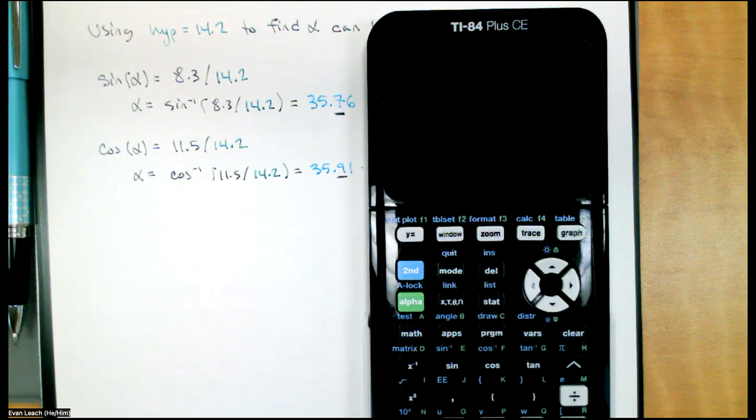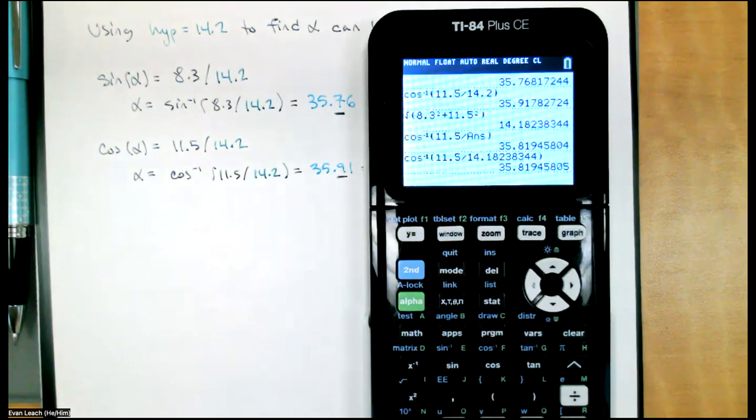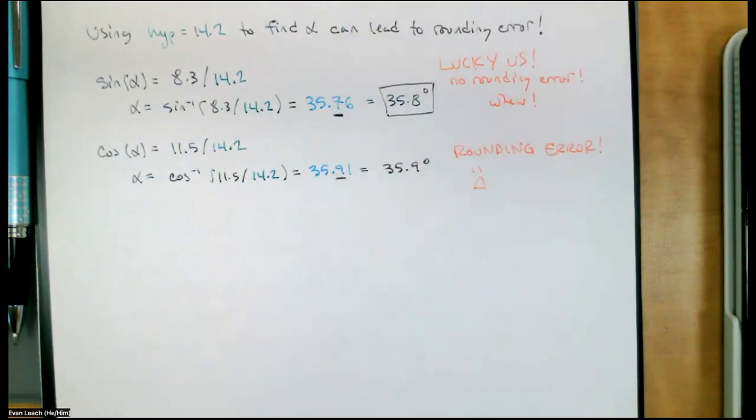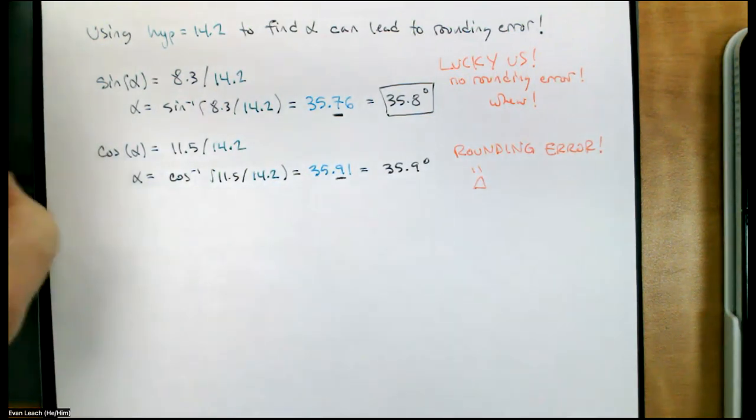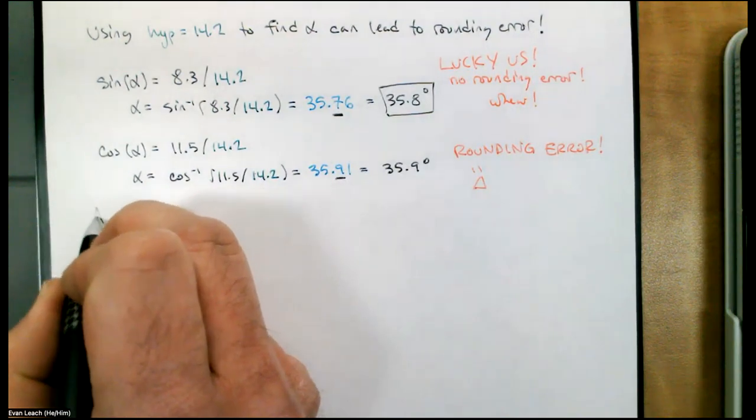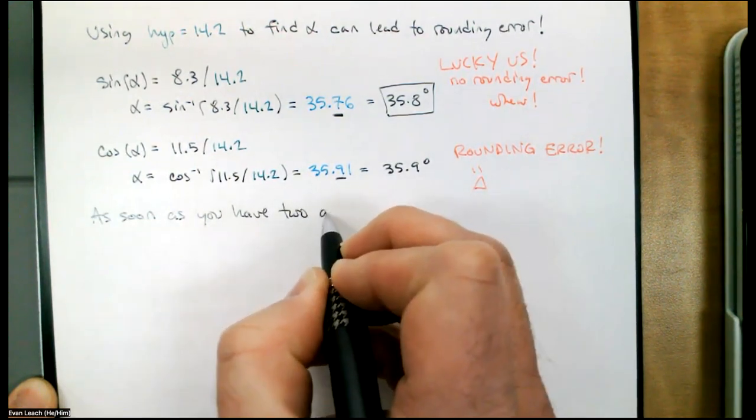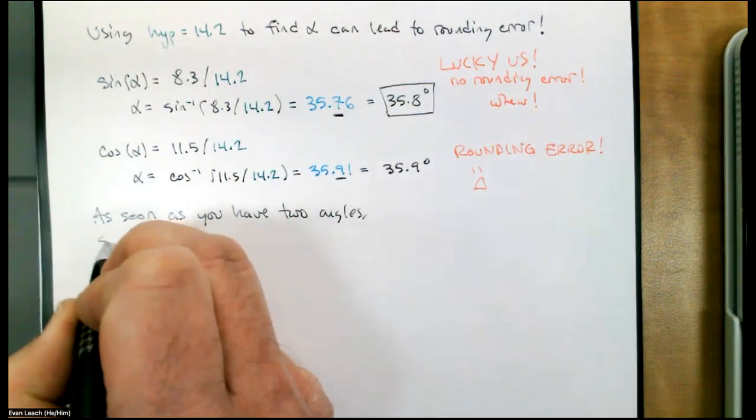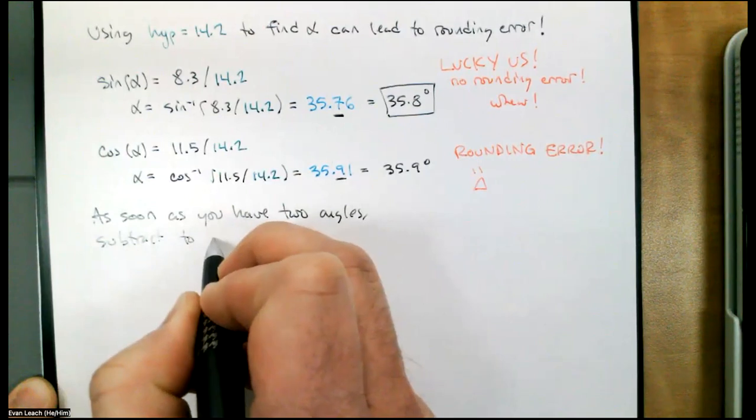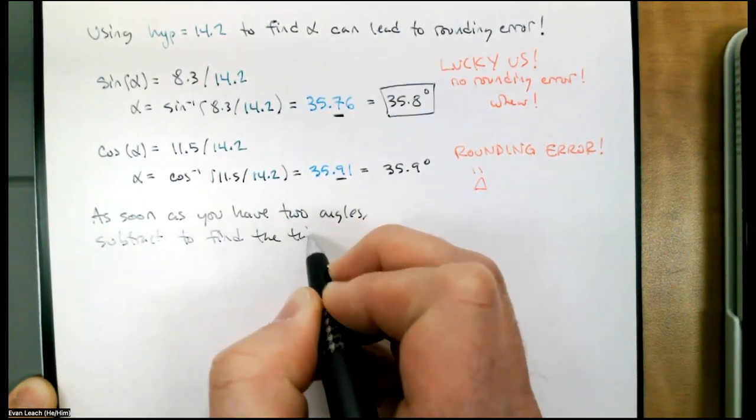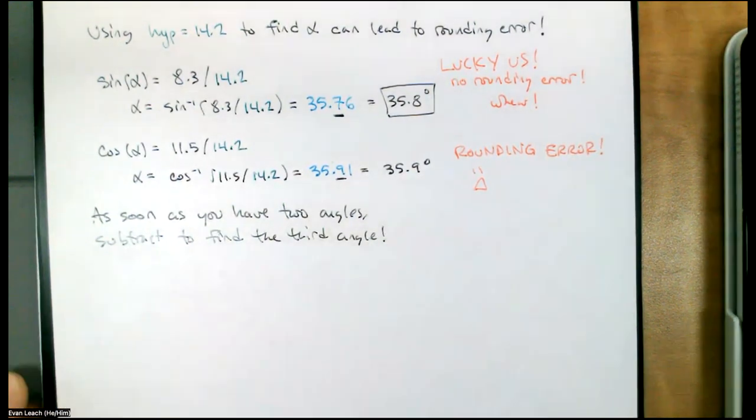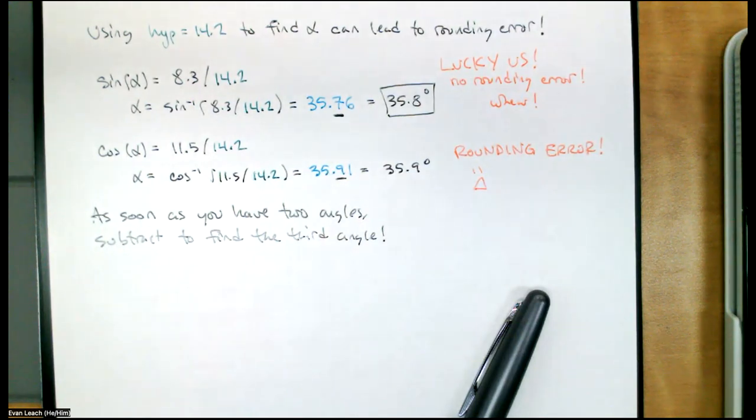More importantly, watch out for your rounding error. I mean, that's why you might be getting things wrong. One thing I do want to say quickly before we take a break is that at this point in the problem, we have two of the angles. As soon as you have two of the angles, just subtract to find the third one. That should be always your first thing. As soon as you have two angles, subtract to find the third. As soon as you have two angles, subtract to find the third. Immediate.